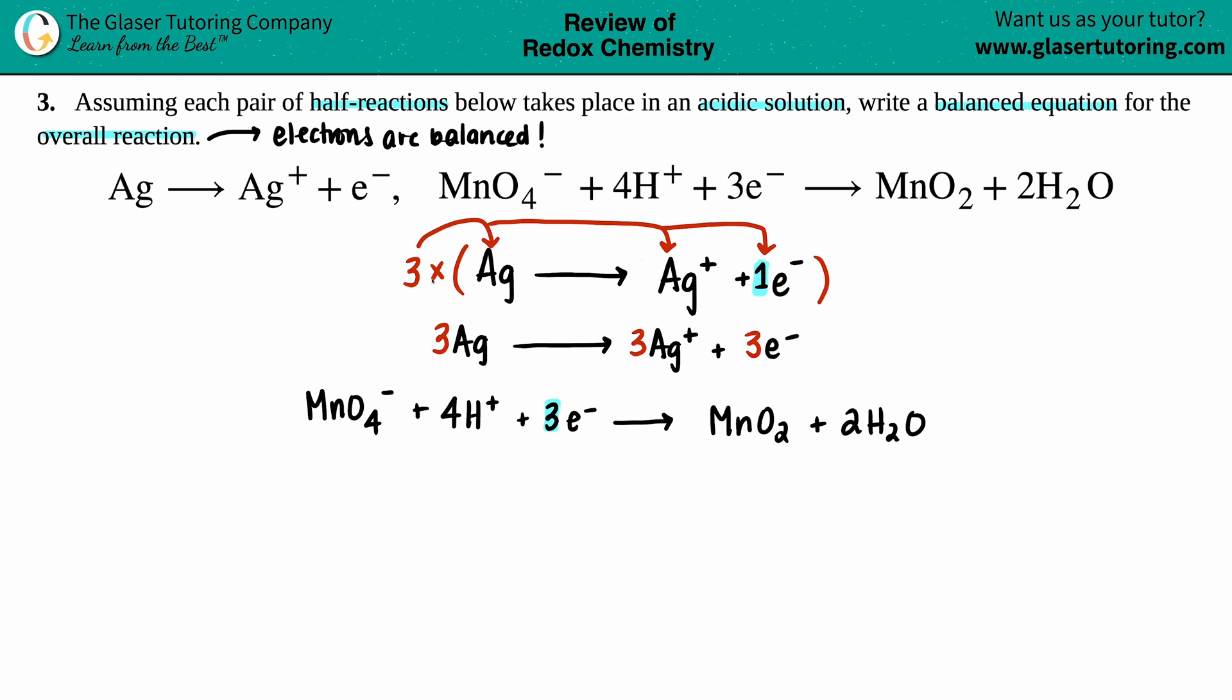Once I write that new equation, this one is now void—I don't even care about this one anymore. Now I'm just working on these two, and now we're good because I didn't want to get rid of the three, I just wanted to multiply. Now the electrons are balanced. I have three electrons on my top equation, three electrons on my bottom equation, so we're all good to go here.